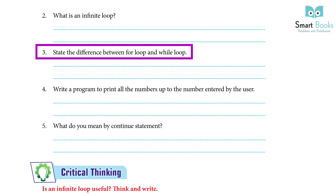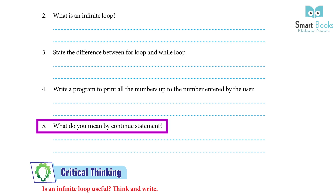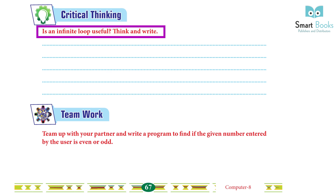3. State the difference between the for loop and while loop. For loop: used to repeatedly iterate over a sequence; also called a counting loop. While loop: executes a series of statements if the specified condition is true; referred to as a conditional loop. 4. Write a program to print all numbers up to the number entered by the user — ask students to do it themselves. 5. What do you mean by the continue statement? Answer: the continue statement causes the loop to skip the remaining portion of its body and retest its condition before updating the loop variable. Practical thinking: is an infinite loop useful? Ask students to think and write.